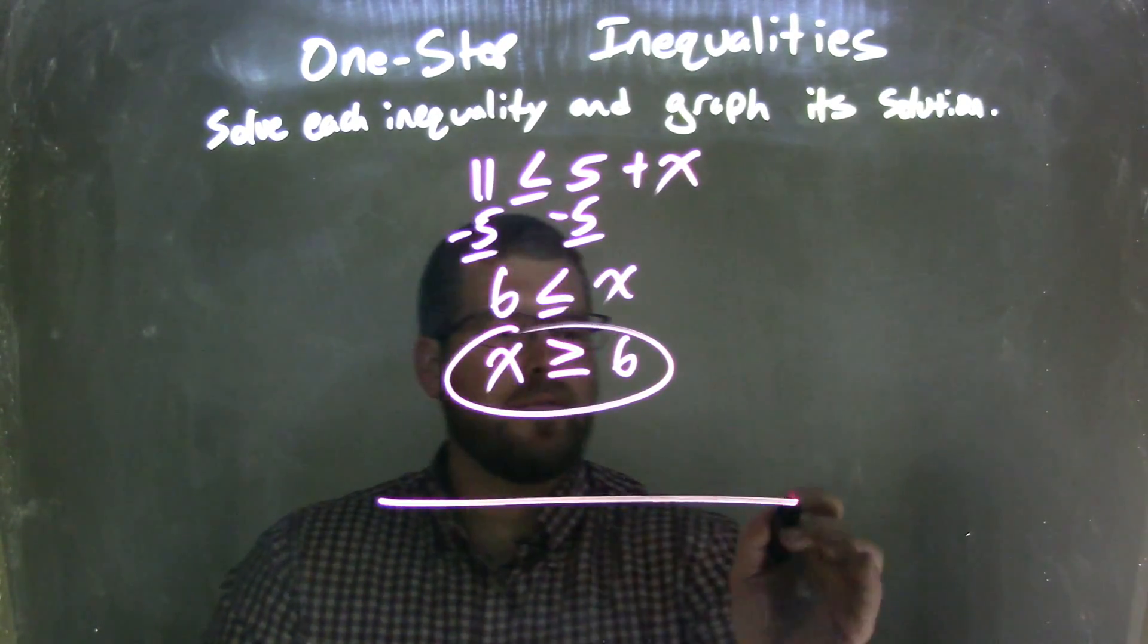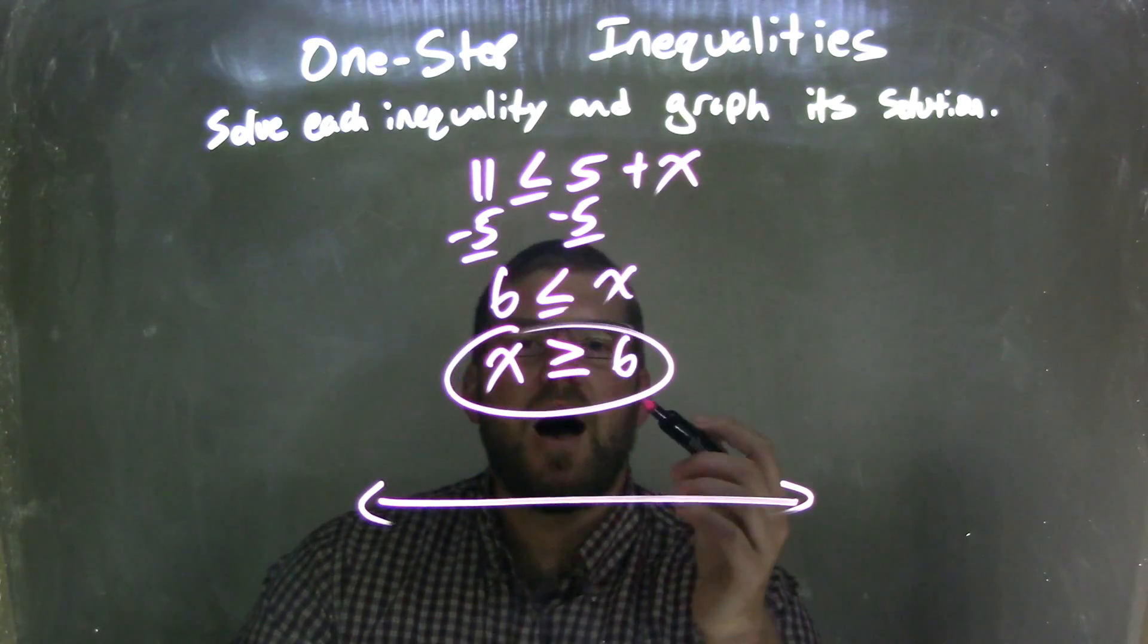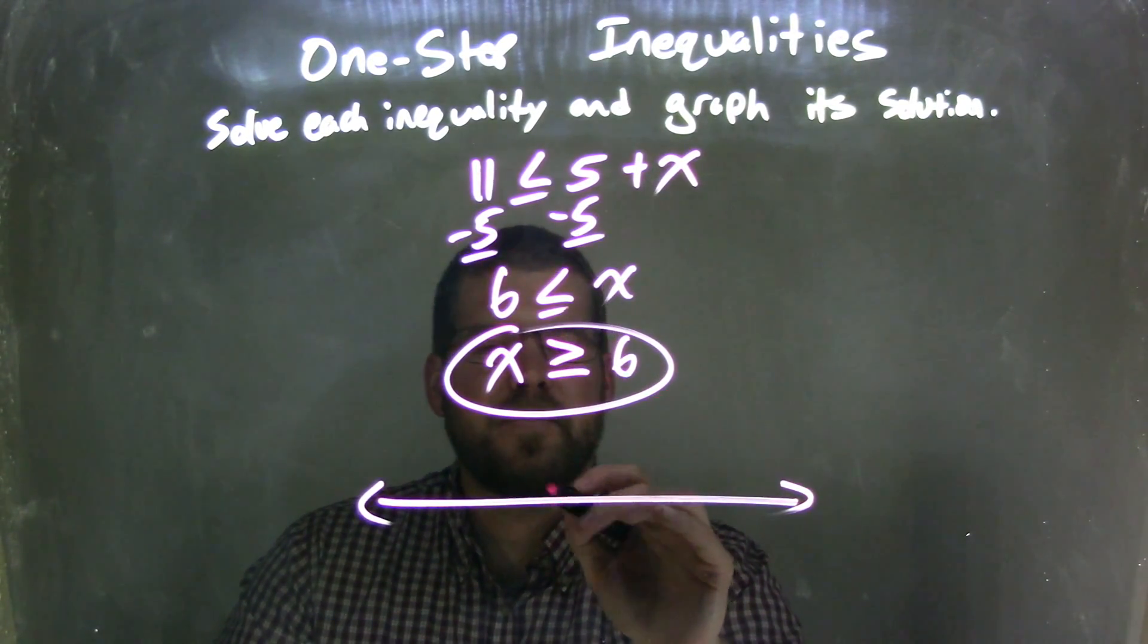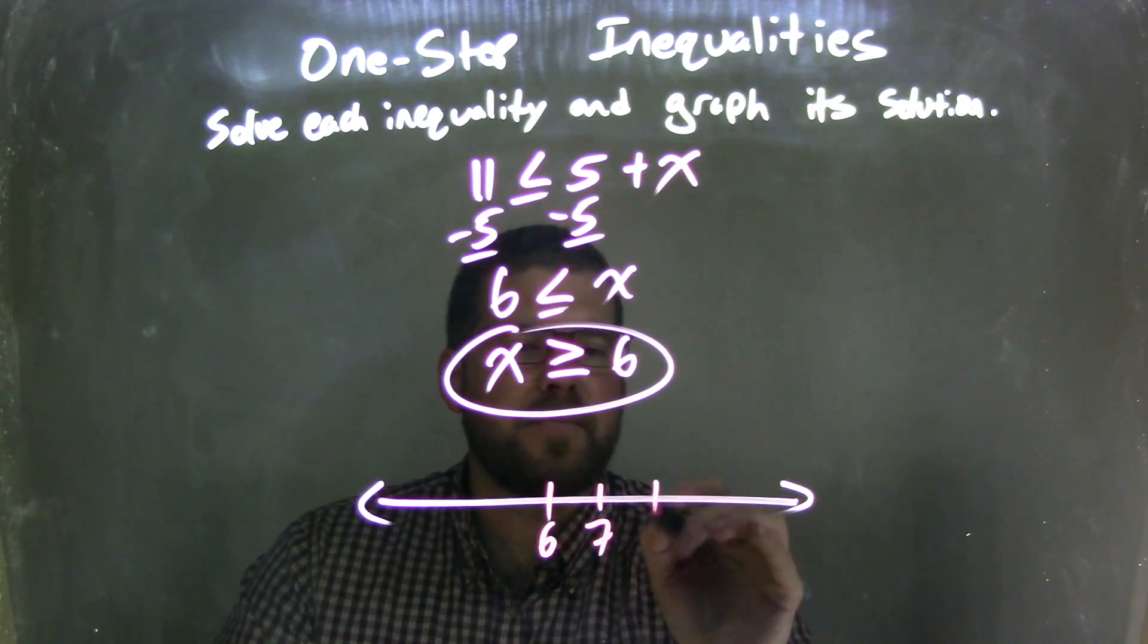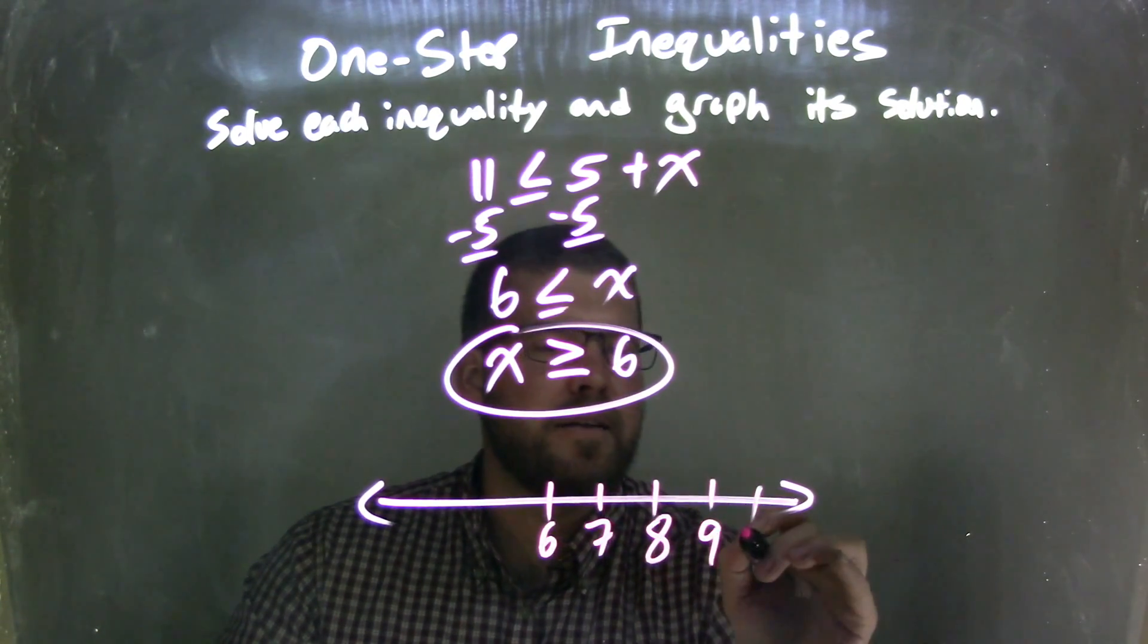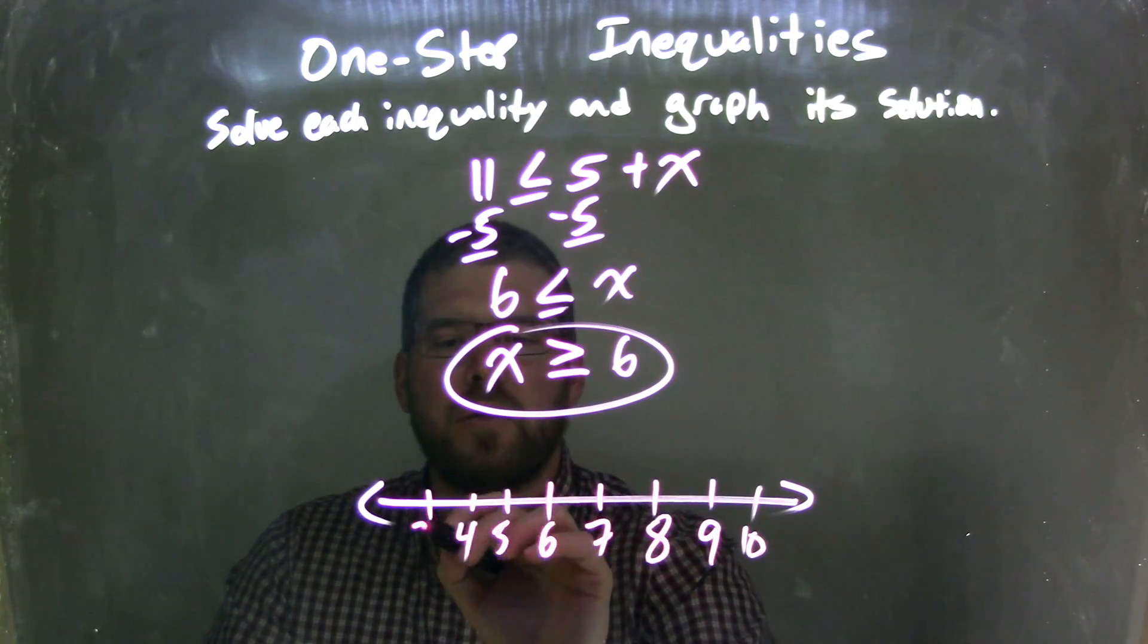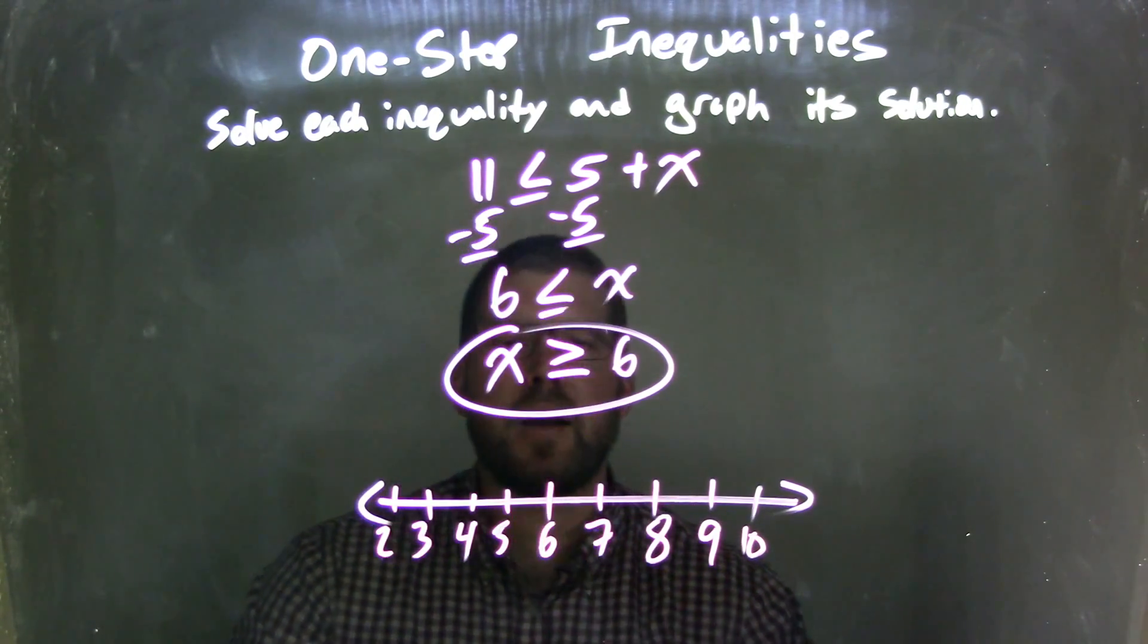But I need to graph it. So by graphing it right here, I need to show that x is greater than or equal to 6. So let's put 6 here. We have 7, 8, 9, and 10, and 5, 4, 3, and 2.